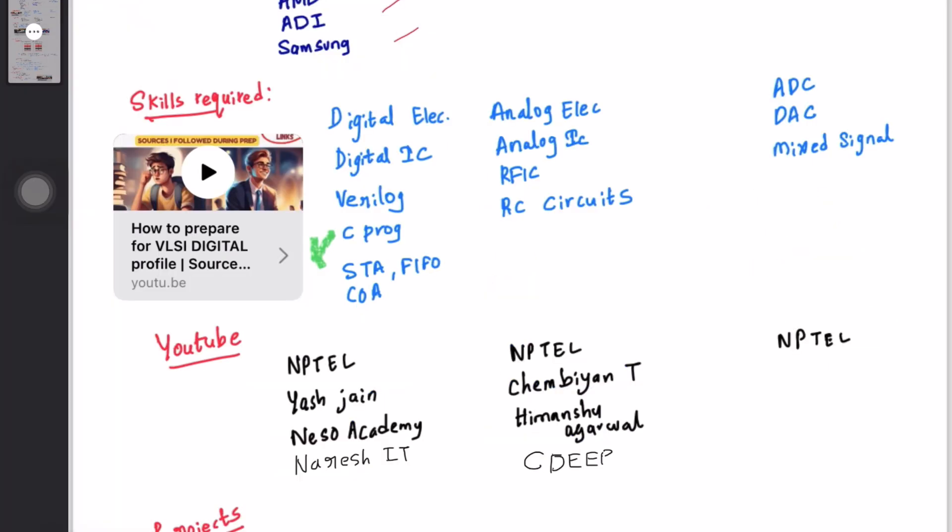Now let us see the subjects we need to study for various VLSI profiles. First, for digital VLSI profile, we need to study subjects like digital electronics, digital IC, Verilog, C programming, STA, FIFO, COA. Please note this is not an exhaustive list. In case you want to know how I prepared for my digital VLSI profile, you can watch out this video here.